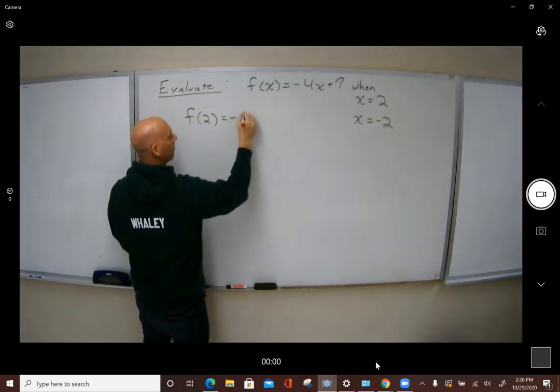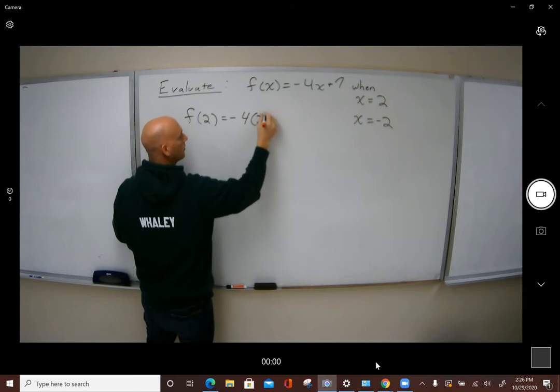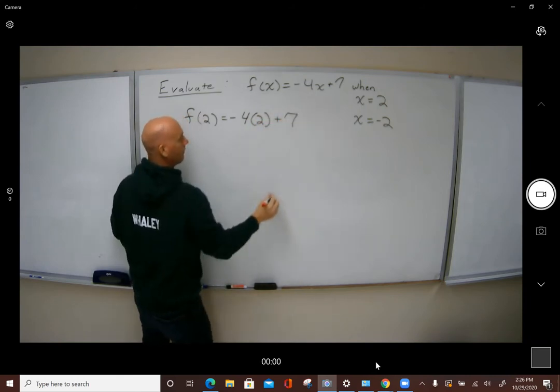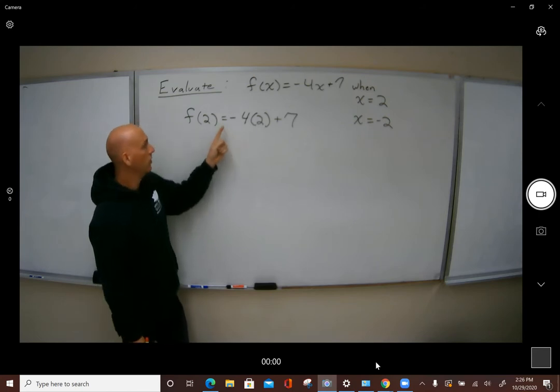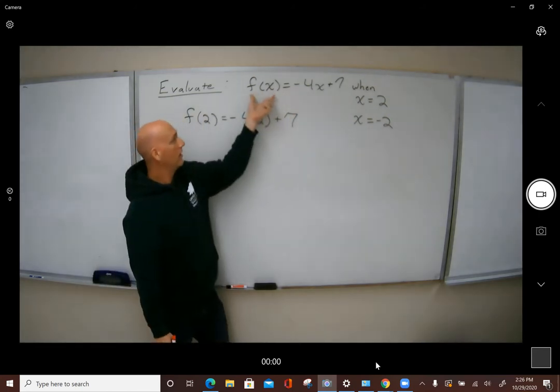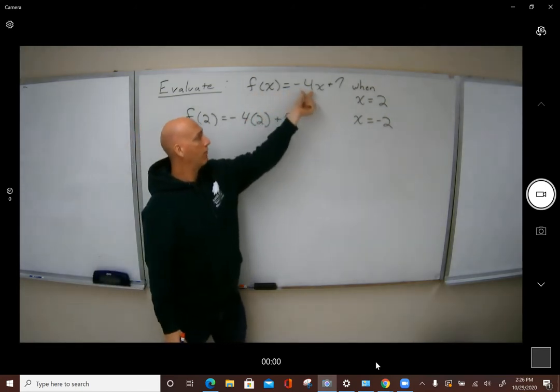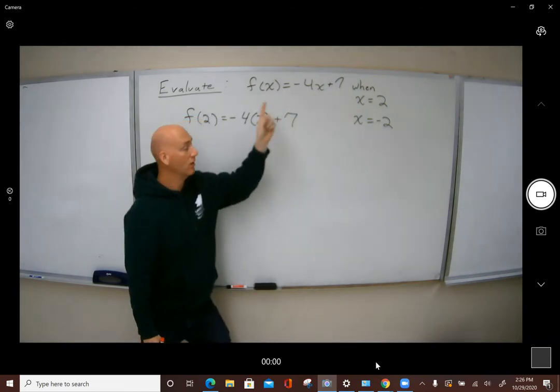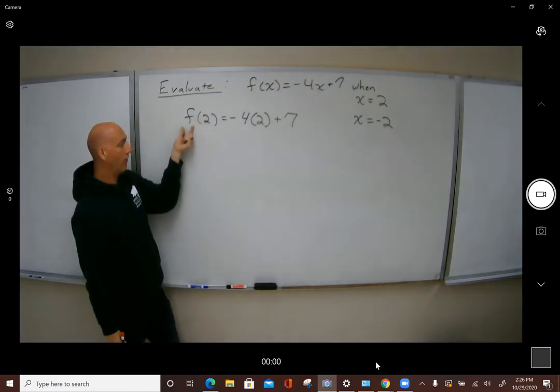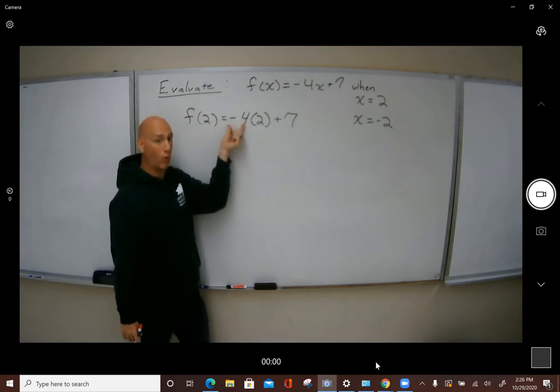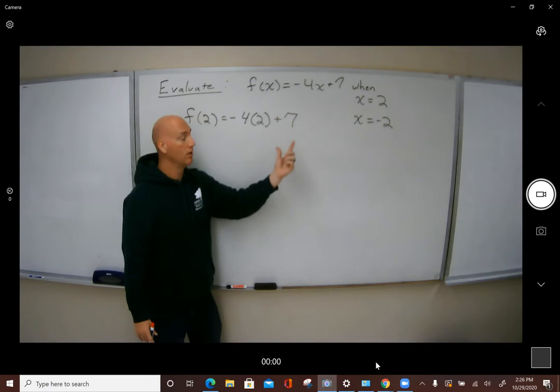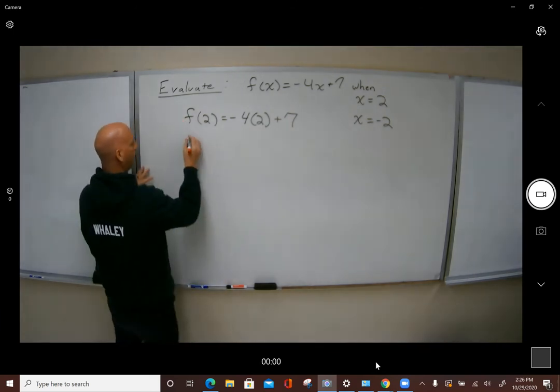This is me finding f of 2. So the whole thing is the output is equal to negative 4 times the input plus 7. Now we're saying the functional value of plugging in 2 is negative 4 times 2 plus 7, and now we just do our math and figure it out.